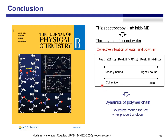Conclusion: We measured terahertz spectroscopy and performed ab initio MD for Nylon 6, and found there are three types of bound water. All modes are collective vibrations of water and polymer. We also observed how bound water changes the polymer dynamics through collective motion in the gamma-to-alpha phase transition. This result was recently published in JPCB, and the paper is open access, so you can download it if you are interested. Thank you for your attention.